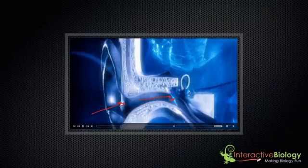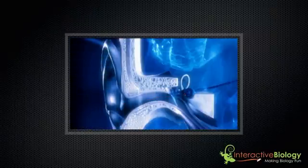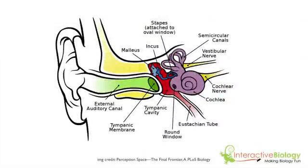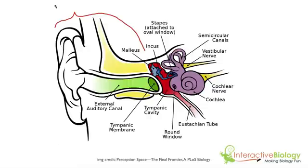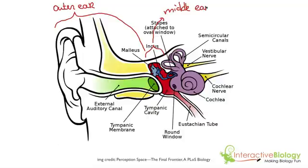Later on, we're going to look at what happens inside the cochlea. So let's get into some more detail. Here we're looking at a structure of the ear. We have the outer ear — up until the tympanic membrane, or the eardrum. Then we have this section here, with the malleus, incus, and stapes, and the eustachian tube — this is called the middle ear. And then we have, with the cochlea, the semicircular canals, and the nerves, that's called the inner ear. And we're going to be talking about the process of sound being transferred from the outer and middle ear to the inner ear.